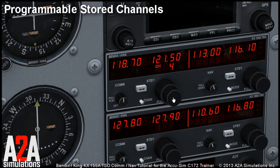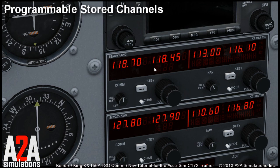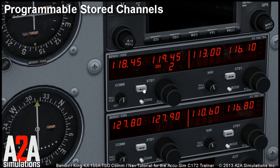You select the channel by rotating one of the knobs — it doesn't matter which. As you can see, I have only eight channels programmed, so I can choose one of them. The channel mode will time out after a few seconds and leave the selected frequency in the standby window, so you still have to press the transfer button to make it an active frequency. Each time you want to use a frequency from channel memory, press the channel button, select the channel number, and press the transfer button.